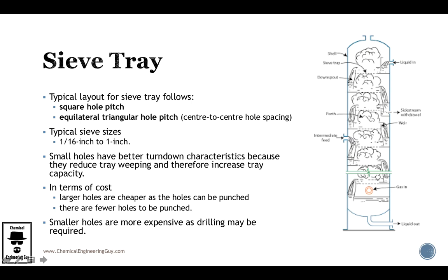The typical sieve sizes can go from 1/16 inch to 1 inch. One inch is kind of large—try to imagine your thumb. We want to avoid very small holes because the smaller you get, the easier it will foul, and you want to avoid fouling.